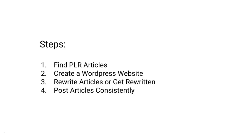The first step is to find PLR articles. PLR stands for Private Label Rights, so you can practically do what you want with these articles. The next step is to create a WordPress website. Third step, you want to rewrite these articles or get them rewritten. Then the fourth step is you want to post these articles consistently — whether that's once a day, once every two days, or once every three days — because over time this content will add up. In Google's eyes, you're going to become an authority and you'll start ranking and getting free traffic.